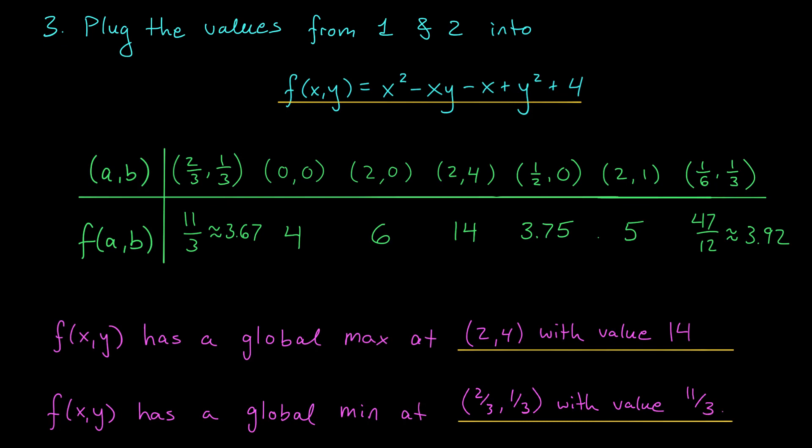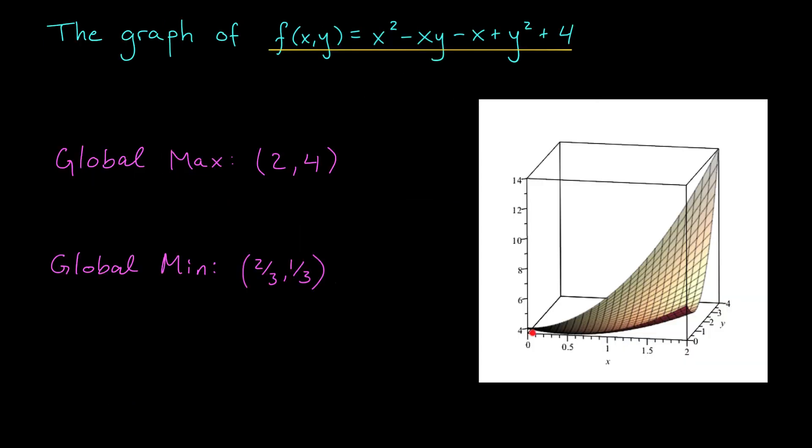All right, let's take a quick look at the graph and make sure we're correct. So here you have it, the graph of our function over this triangular plate. You can see that we reach a maximum value over here. We have a height of 14 when x is 2 and y is 4, just as we found on the last slide.